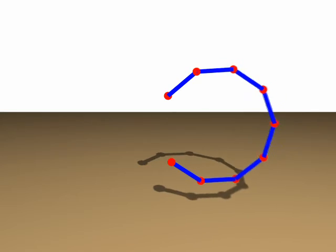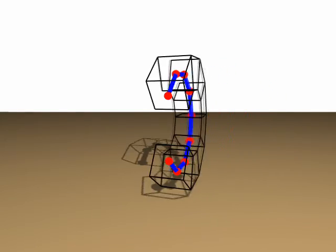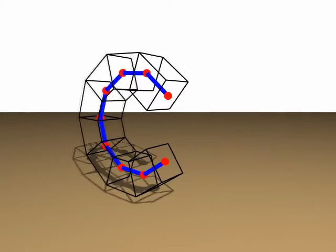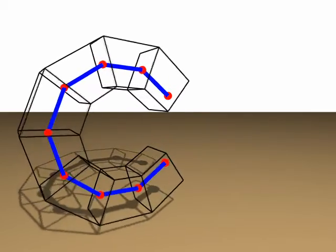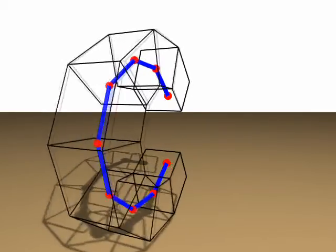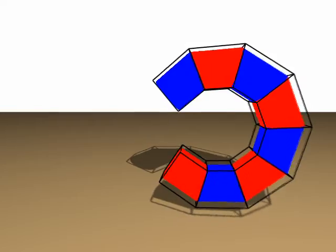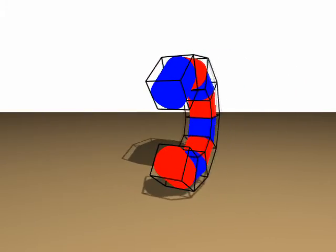The segments are rasterized using coarse bounding volumes. Inside these volumes, conical frusta are analytically raycasted in the pixel shader.